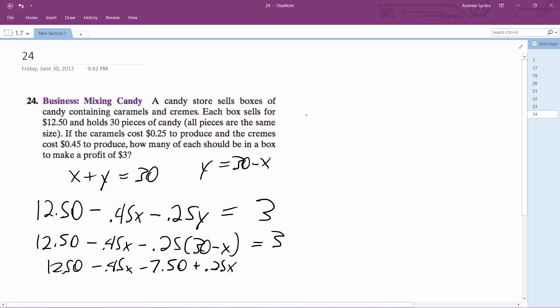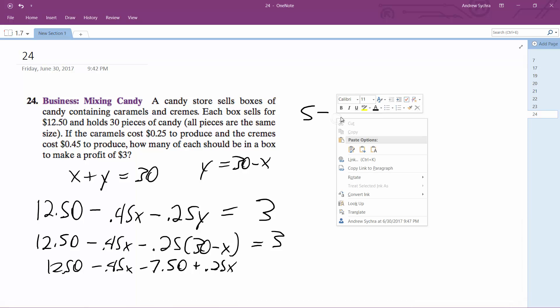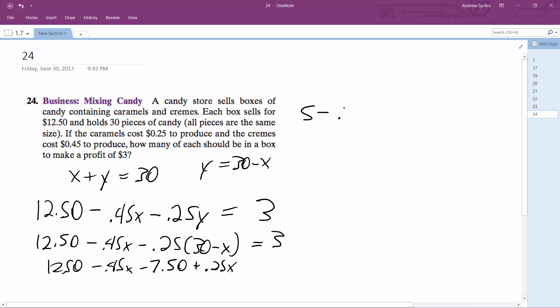So we're rewriting this, I get 5, and then I get minus 0.2x is equal to 3. Subtract 5, negative 0.2x is equal to negative 2. So x is equal to 10.